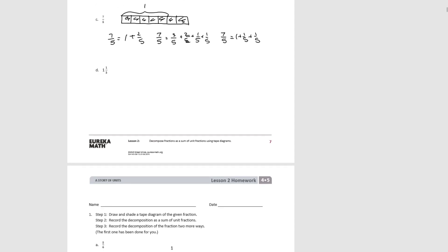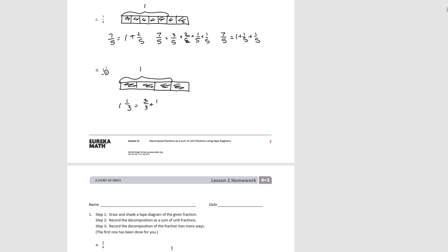For D, we know that we're talking about thirds, and we have 1 whole, so we know that 1 would be 3 thirds plus 1 more third — so we're going to have 4 thirds in our tape diagram. 3 thirds is 1, so 1 and 1 third could be equal to 3 thirds plus 1 third, or 1 and 1 third could be equal to 2 thirds plus 2 thirds, or written as the sum of unit fractions: 1 third plus 1 third plus 1 third plus 1 third. And that's the end of Lesson 2.